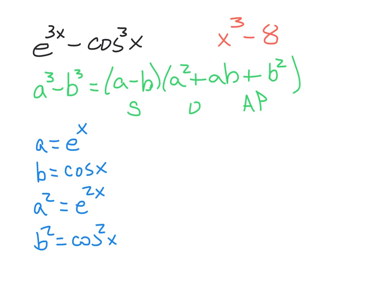Now, all you're doing is applying, worrying about your signs. And again, that's where you use SOAP. So, the factored form of the polynomial in the black there is going to be e to the x. Same sign, so subtract. Cosine of x. Times a squared, so in this case, e to the 2x. Opposite sign, so plus. These two multiplied together. Then this one's always positive. Cosine squared of x.